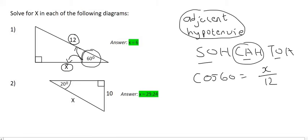As with what we saw in the previous video, to get this 12 to the other side, you're going to end up multiplying. So x is going to be equal to 12 cos 60. And if you type all of that in on the calculator, you're going to get an answer of 6.